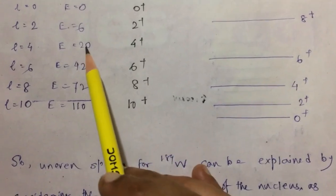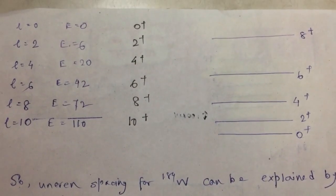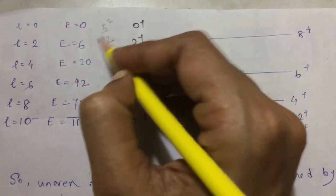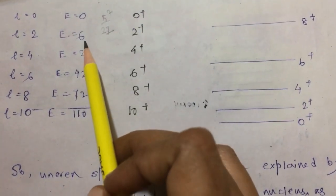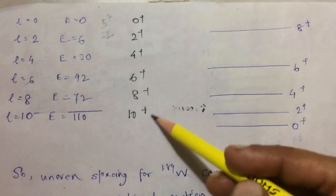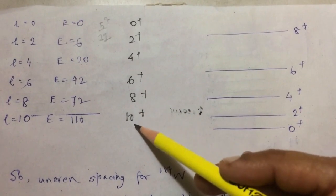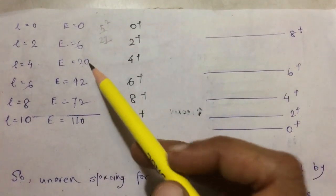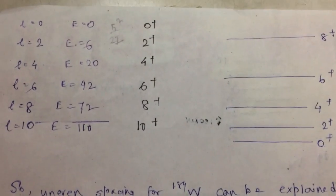All these energy values are written in ℏ²/2I units. That is, this is 6ℏ²/2I, 20ℏ²/2I, and these are the L values and these are the energy levels. As you can see, the difference between L equal to 0 and L equal to 2 state, the energy difference is 6.